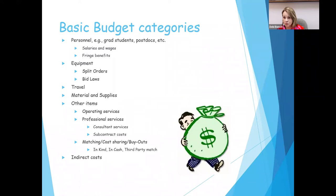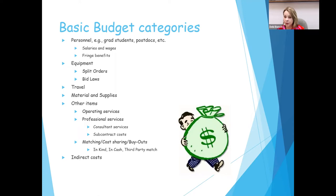You should always include the maximum amount of indirect costs allowed on a grant. Every sponsor might have a different amount they allow, and you should adhere to whatever those guidelines are. What we ask for when we're routing our proposals is a copy of what the indirects say on that particular grant so we don't have to look it up and can make sure we're getting the right amount — that's what the sponsoring agency is allowing.